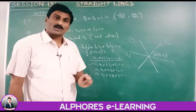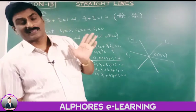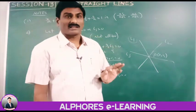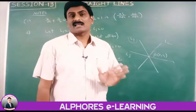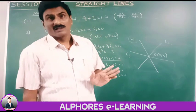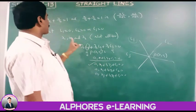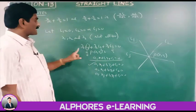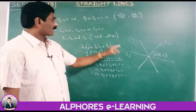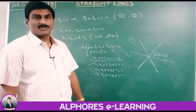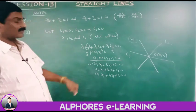Summary: if l1=0, l2=0, l3=0 are three concurrent lines, then there exist scalars lambda-1, lambda-2, lambda-3 (not all zero) such that lambda-1·l1 plus lambda-2·l2 plus lambda-3·l3 equals 0.